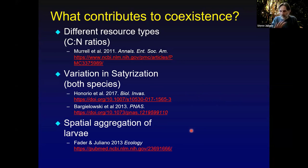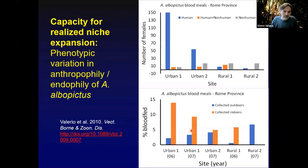My main point from this discussion of coexistence is that many different mechanisms can contribute to the variation we see in which of these two species occurs and dominates in a given location. I want to get to the capacity for expansion of the realized niche of the two species should one of them be reduced or removed.